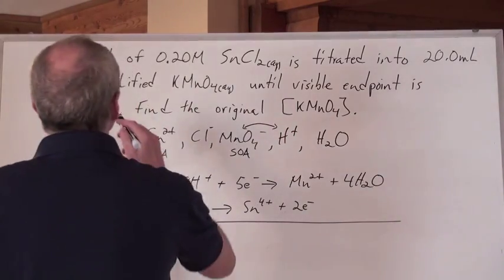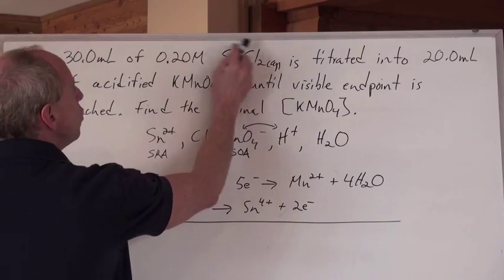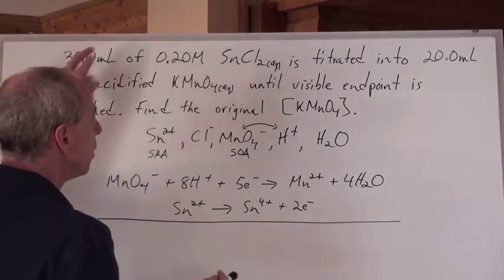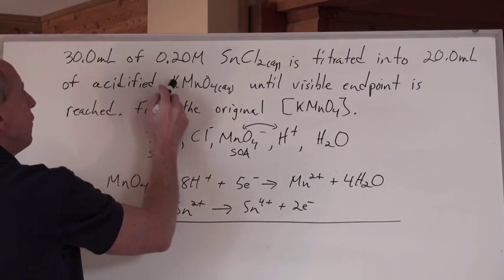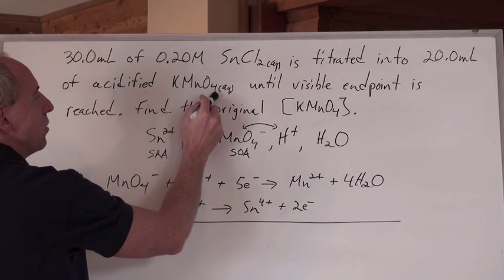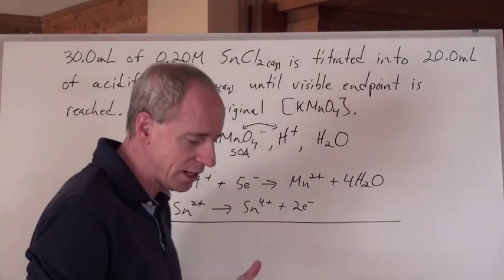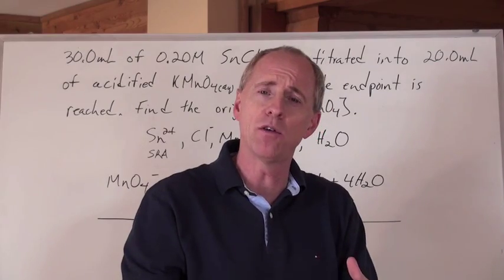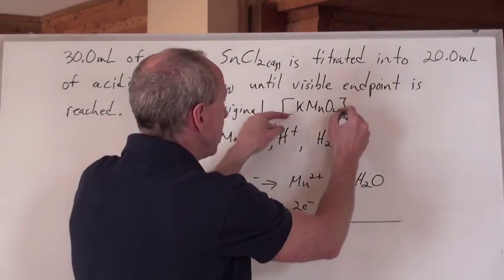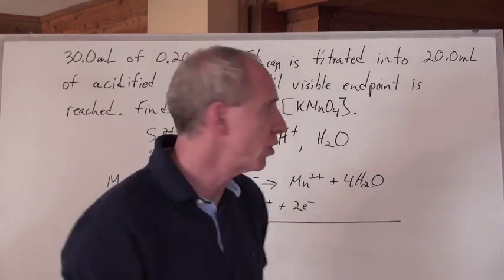So here's the question: 30 milliliters of 0.2 mole per liter tin(II) chloride solution is titrated into 20 milliliters of acidified potassium permanganate solution until you get this visible endpoint reached. The question is, I don't know what the concentration is of the KMnO₄. Find the original KMnO₄ concentration.